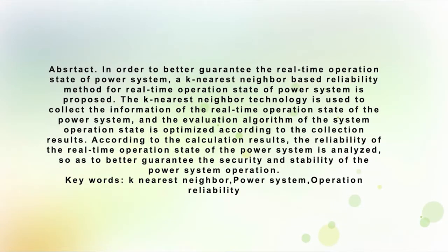In order to better guarantee the real-time operation state of power system, a key nearest neighbor-based reliability method for real-time operation state of power system is proposed. The key nearest neighbor technology is used to collect the information of the real-time operation state of the power system, and the invariation algorithm of the system operation state is optimized according to the collection results. According to the calculation results, the reliability of the real-time operation state of the power system is analyzed, so as to better guarantee the security and stability of the power system operation.